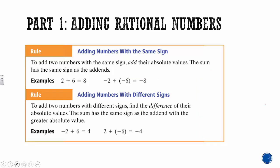When you go to add rational numbers, there are two things that could happen: you could add numbers with the same sign, or you could have numbers with different signs. If you are adding numbers with the same sign, your answer is also going to have that sign. Positive 2 plus positive 6 gives you positive 8. Negative 2 plus negative 6 has to give you negative 8 — you just add their absolute values and keep the sign.